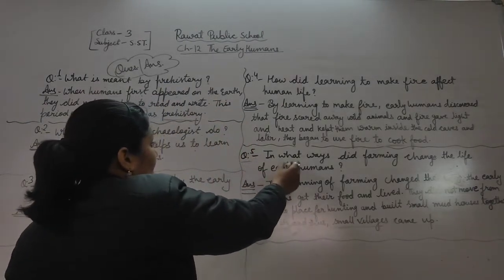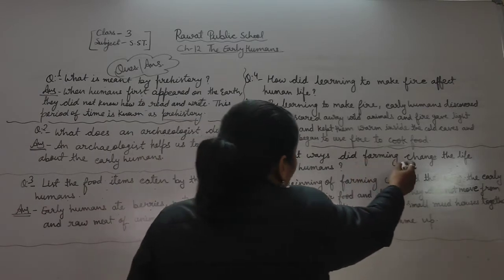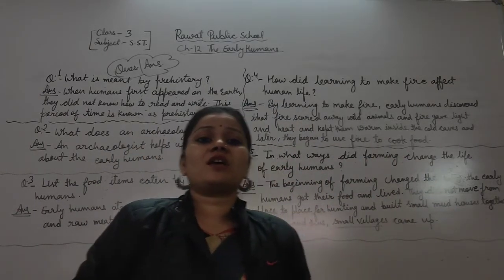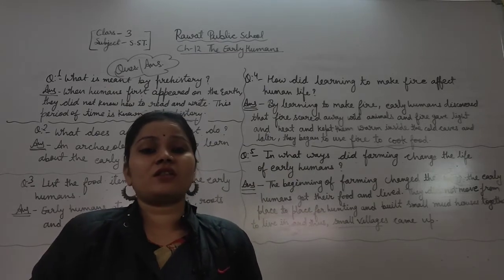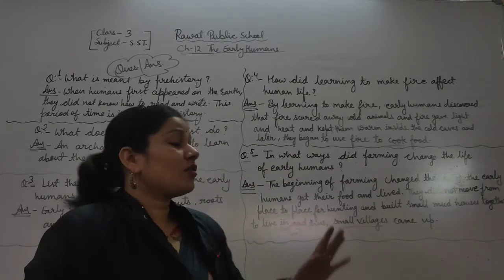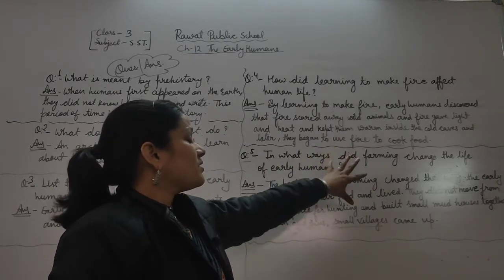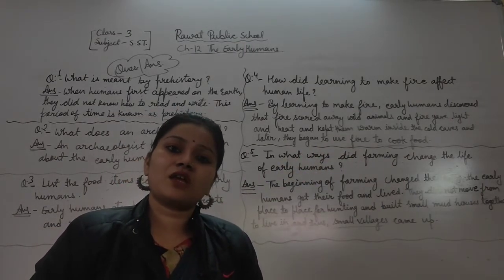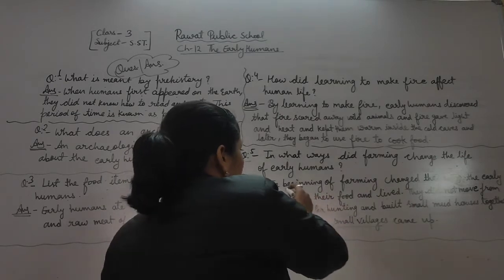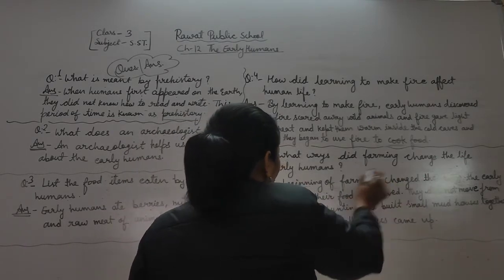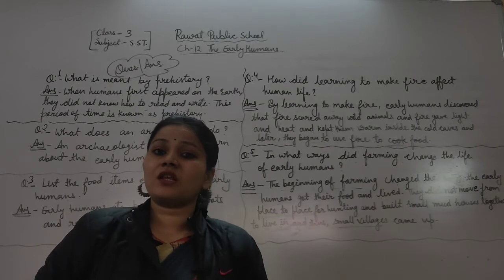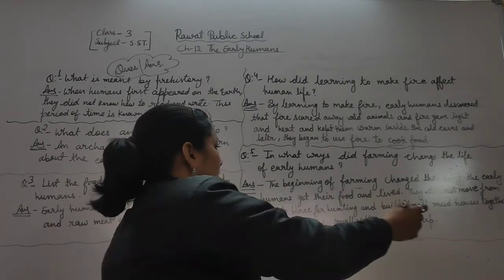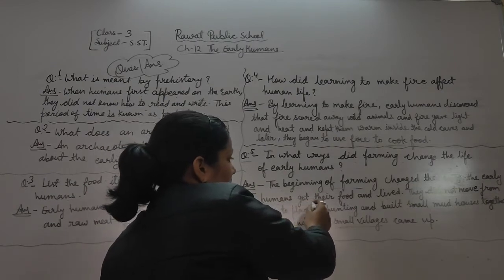Question number five: In what ways did farming change the life of early humans? Farming ne early humans ki life ko kaise change kiya — kaun kaun se tarike hain? The beginning of farming changed the way early humans got their food and lived. Jab unhain kheti karna aana shuru ho gaya, tab unki life change ho gayi.